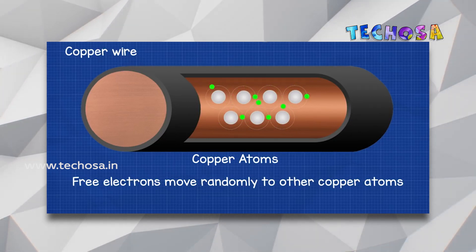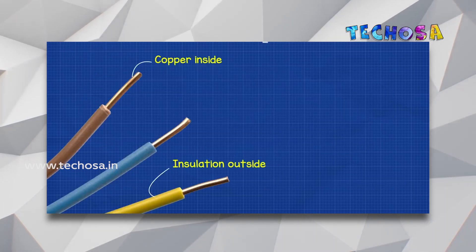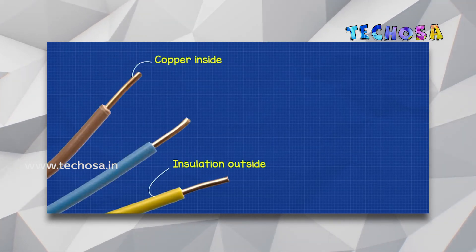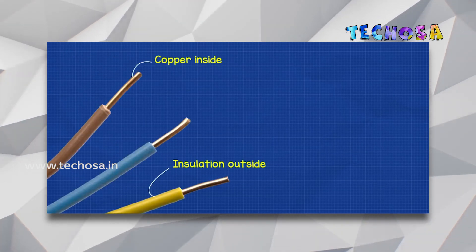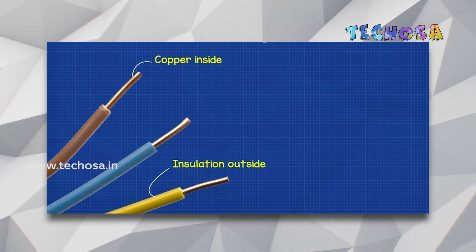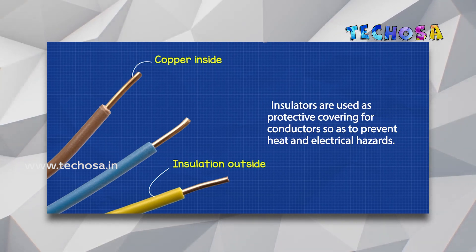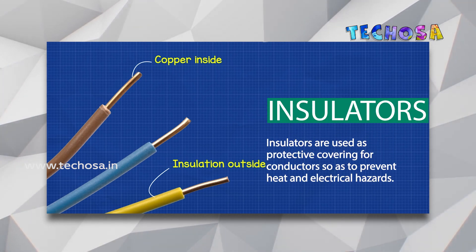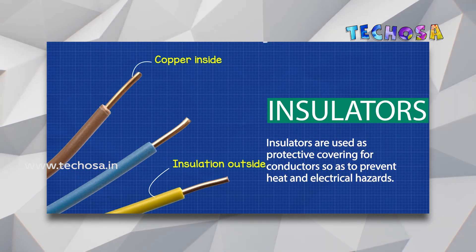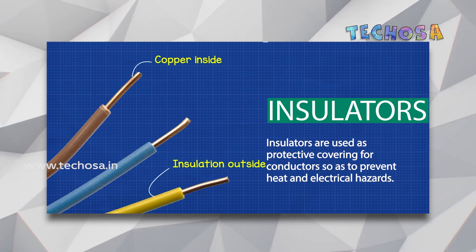Materials that do not have any free electrons cannot pass electricity through them. They are called insulators, like plastic, glass, rubber, etc. For example, in a copper wire, the free electrons move randomly.